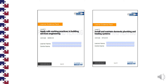It would be advantageous to follow this presentation with the documents shown: Apply Safe Working Practices in Building Services Engineering and Install and Maintain Domestic Plumbing and Heating Systems. You should already have a copy of both documents; if not, copies can be obtained from Optionskills. These two documents are important because they are where you record, sign off and cross reference the work you have done.